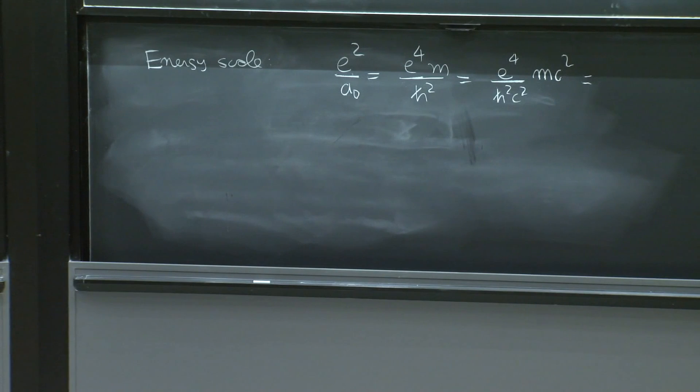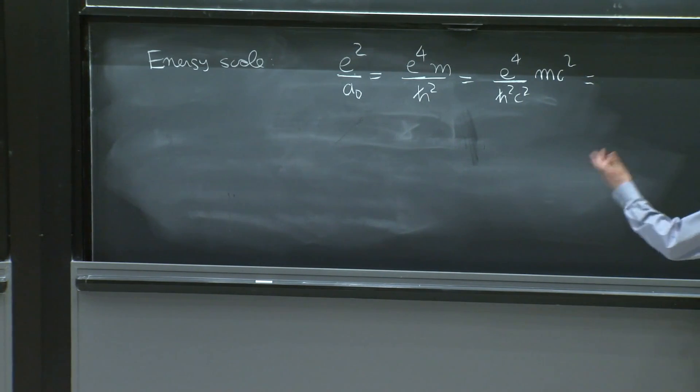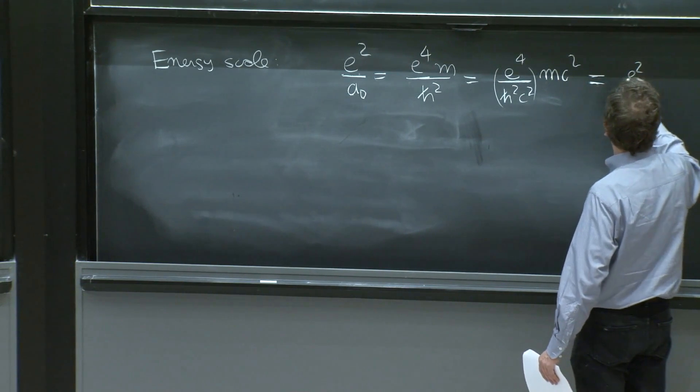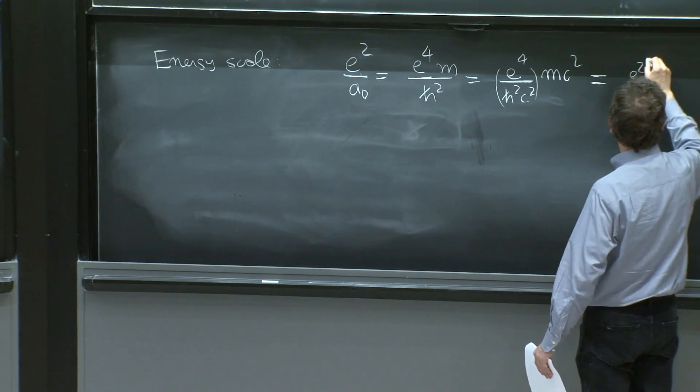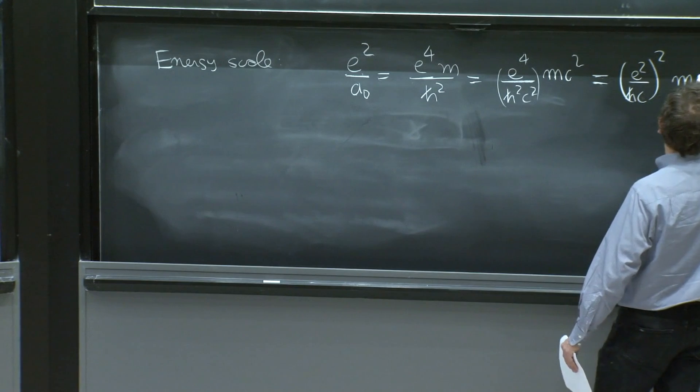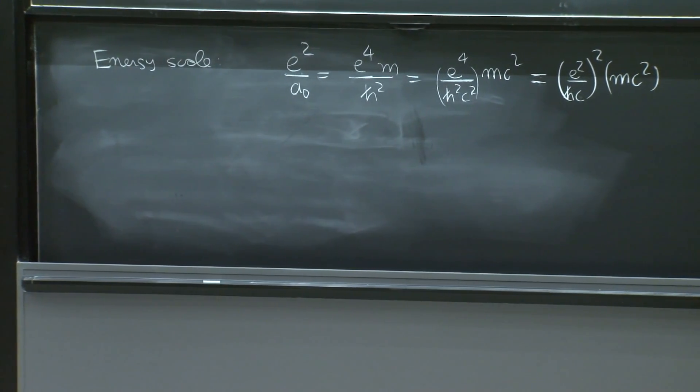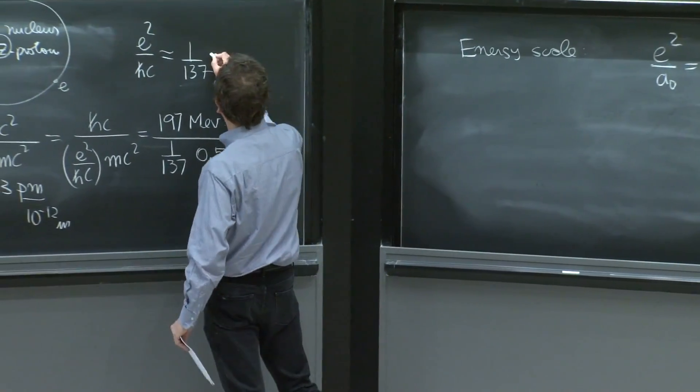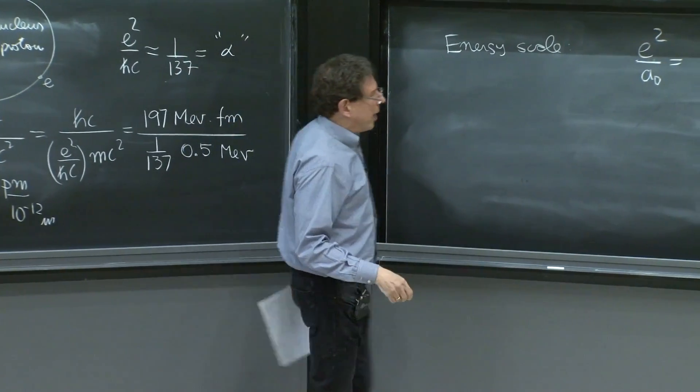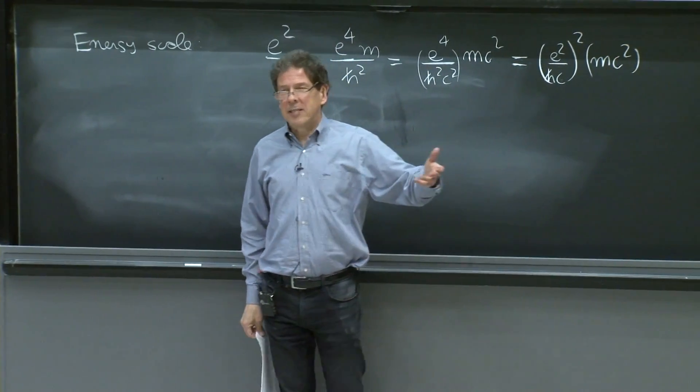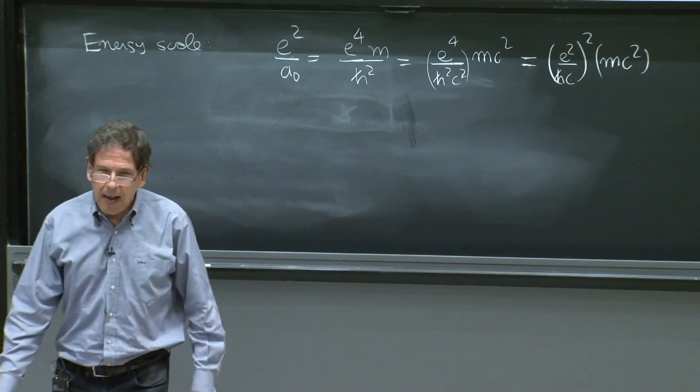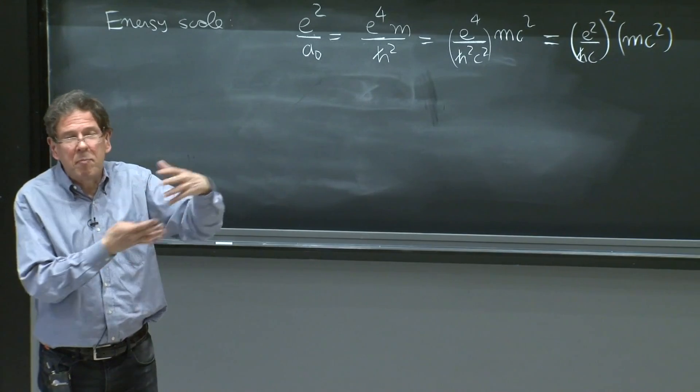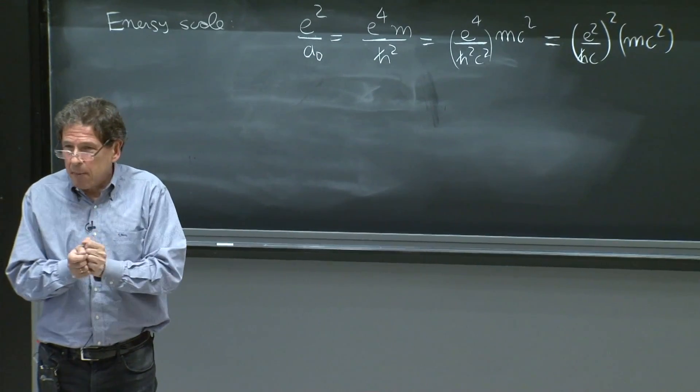Which is e to the fourth over h squared c squared times mc squared. And you see, it's kind of nice to see this quantity disappearing, because here you have e squared over hc squared times mc squared. So the typical energy of the hydrogen atom is the fine structure constant, sometimes called alpha, squared times an energy. And what energy is available in the problem? The rest energy of the electron.